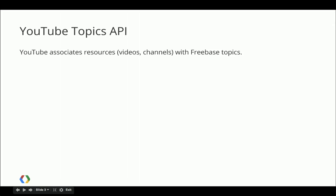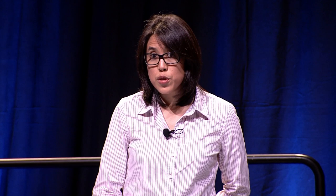Philip's team has been working on automatically annotating resources such as videos and channels with Freebase topics. If you're not familiar with Freebase, it's an open crowdsource knowledge graph where nodes correspond to real-world things — a person, a place, or a song — and each of these nodes has a unique ID. In the latest version of the YouTube Data API, you can look up a YouTube video and see what Freebase topics have been automatically associated with it.